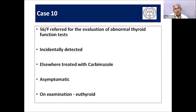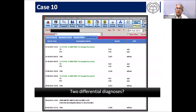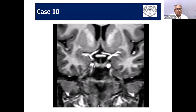Case: A 58-year-old lady with incidentally detected abnormal thyroid function, treated with carbimazole, asymptomatic and looking euthyroid. On serial measurements, T4 is high but TSH is not suppressed. Two differentials: resistance to thyroid hormone, or a TSH-secreting pituitary tumor. MRI showed no pituitary adenoma. Diagnosis is resistance to thyroid hormone — patient is on regular follow-up with no treatment needed.